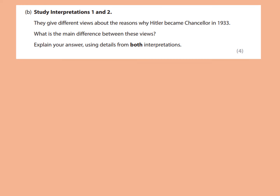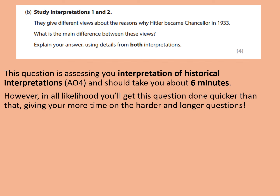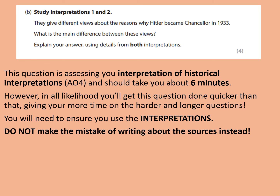The question is assessing your interpretation of historical interpretations, which is assessment objective four, and it should take you about six minutes to do. In all likelihood you'll get this question done quicker than that, giving you a bit more time on the harder and longer questions like the eight mark source utility question and the 16 marker at the end. You will need to ensure that you use the interpretations — do not make the mistake of writing about the sources instead. They will be in the same booklet.